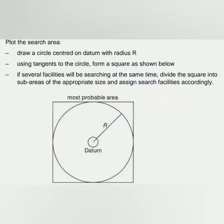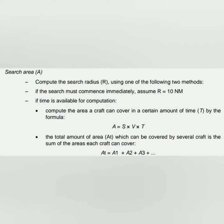Once the datum and important definitions are clear, the next step is deciding on the most probable area. From the datum, you draw a circle using a certain radius, then make a tangent on that circle to form a square. This square is subdivided into parts based on available facilities on scene. To calculate the radius, if search must commence immediately, assume r equals 10 nautical miles. If time is available, use the formulas to calculate how much area a vessel can cover in a certain time, then back-calculate using area equals pi r squared to find the radius.